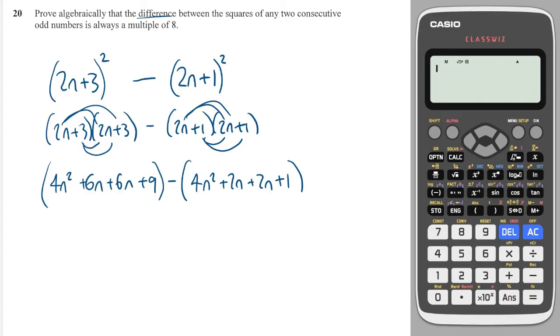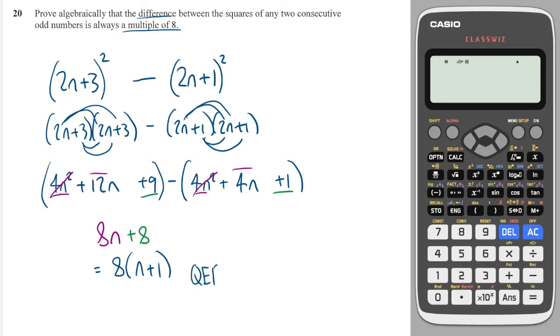I can collect these together. So 6n plus 6n is 12n, and 2n plus 2n is 4n. I can then do my subtraction. 4n squared minus 4n squared will cancel. 12n minus 4n is 8n. And then we have 9 minus 1 is 8. So we have 8n plus 8, and we need to show that that's a multiple of 8. All I need to do is show that I can take out a factor of 8, which of course I can. So we have proved it, QED.